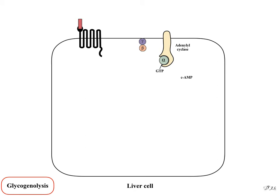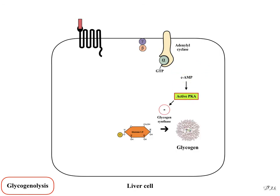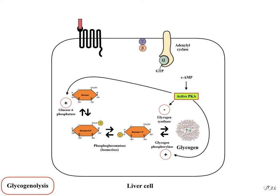Cyclic AMP causes inactive protein kinase to become active protein kinase A (PKA). This active PKA inhibits glycogen synthase and stimulates glycogen phosphorylase and glucose-6-phosphatase. As a result, glucose is released from liver cells into the blood — this is glycogenolysis.